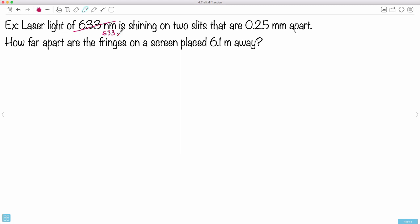This is 633 nanometers. A nanometer is 10 to the minus 9, so I know it's 10 to the minus 9 meters. This right here is 0.25 millimeters—we're going to rewrite it as 0.25 times 10 to the minus 3 meters because millimeters are 10 to the minus 3 meters. This is in meters, so that one's okay.